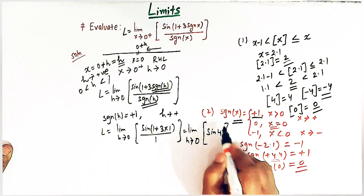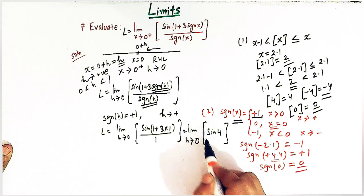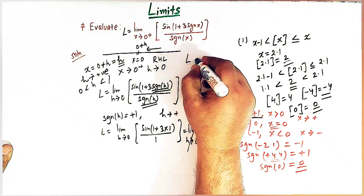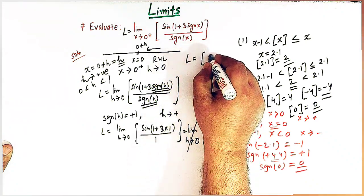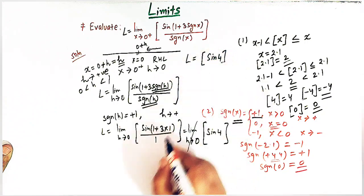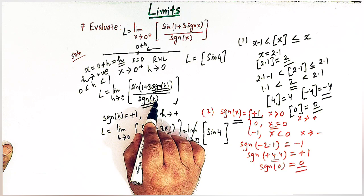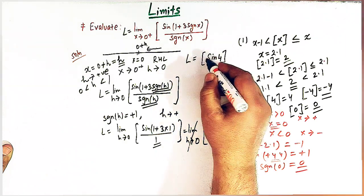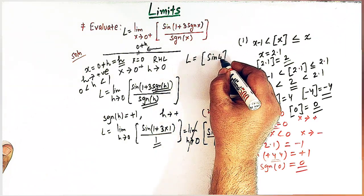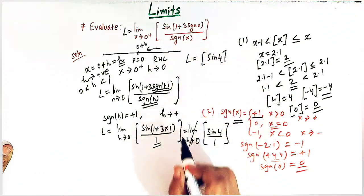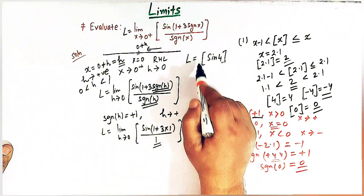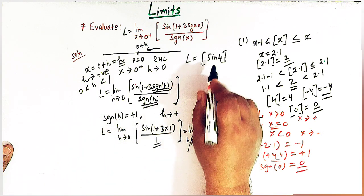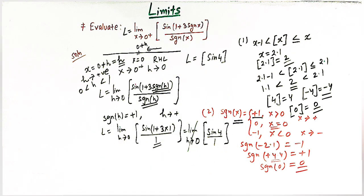Since there is no expression containing h remaining, we can omit the limit sign. So L equals the greatest integer of sin(4), where the denominator signum of h equals 1 gives sin(4) over 1. This is actually sin(4 radians). So now we need to calculate the value of the greatest integer of sin(4 radians), which we will do using the graph of the sine function.